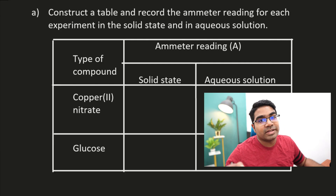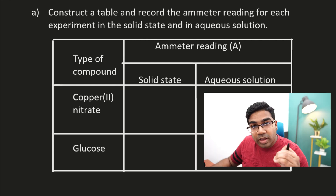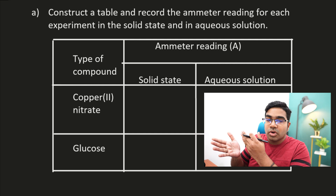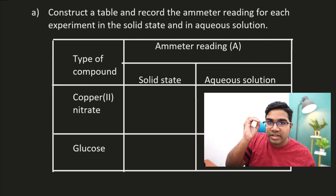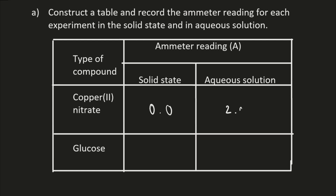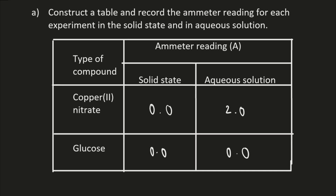Now it's time to record the data. An ionic compound cannot conduct electricity in the solid state, so the ammeter reading will be zero. However, because we are using an analog ammeter, accuracy should be to one decimal place — you cannot just write zero, you must write 0.0. When in aqueous solution there would be a reading, so if you got a reading of two, you must write 2.0. For glucose, a covalent compound, it cannot conduct electricity in either state, so both readings are 0.0.